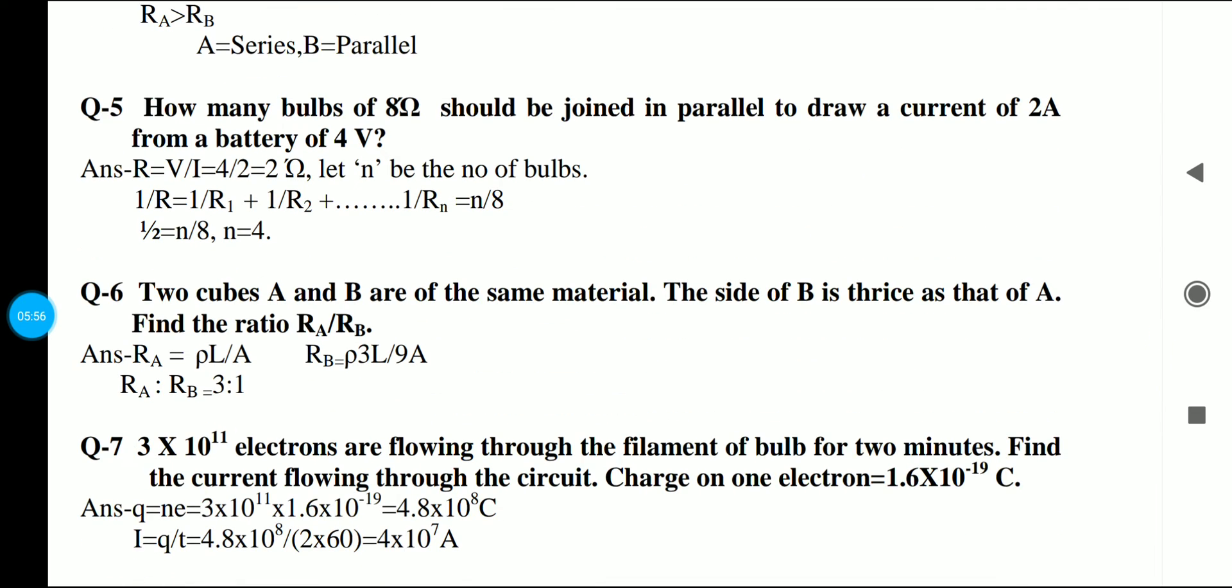Next, it is a very simple question. How many bulbs of 8 Ohm should be joined in parallel to draw a current of 2 Ampere from a battery of 4 Volt? You will simply find resistance here: 4 upon 2 is 2 Ohm. Let N be the number of bulbs. Since it is connected in parallel, 1 by R is equal to 1 by R1 plus 1 by R2. It will be equal to 1 by 2 equals N by 8. The value of N is equal to 4. The answer is number of bulbs 4.